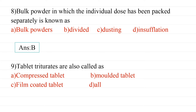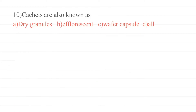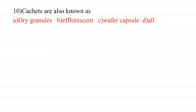Tenth question: Cachets are known as — options include dry granules, efflorescent powders, wafer capsules, or all of the above. Cachets are also known as wafer capsules, so that is the answer.